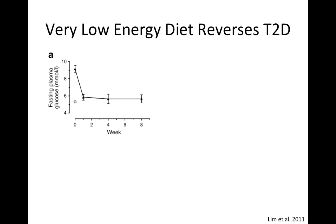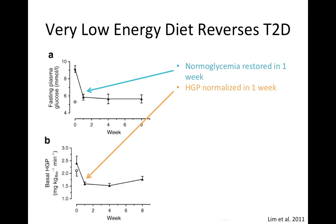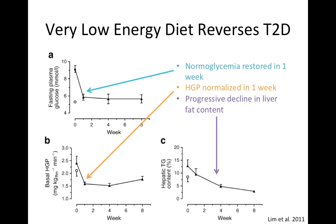As it turns out, just putting subjects on a very low-calorie diet can reverse type 2 diabetes. This diet was 600 calories a day, and after only one week, blood glucose returned to normal. Also, hepatic glucose production returned to normal in just one week, and this seemed to be related to a decrease in the fat stored inside the liver. Improved liver function after only one week continued and seemed to increase throughout the eight weeks of the study.